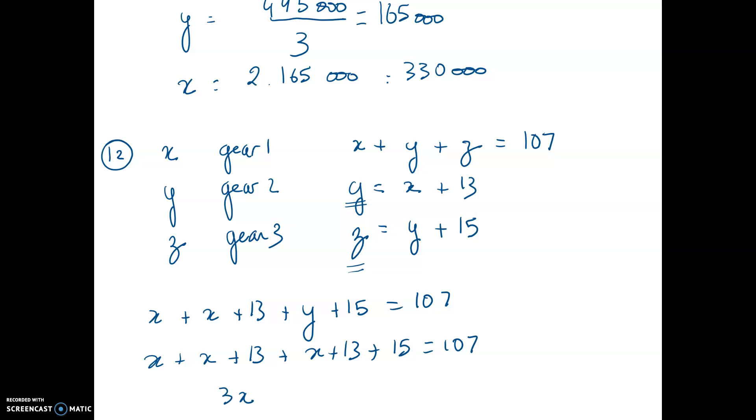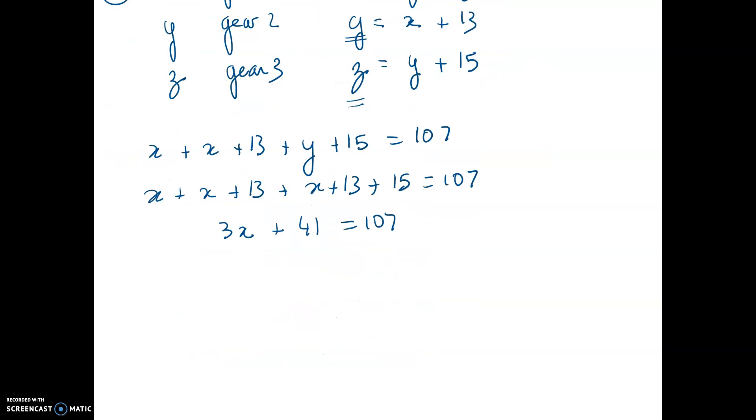Now we got 3X. 26 plus 5, 31 plus 10, 41 equal 107. I subtract 41 from both sides. I end up with 3X equal 106 minus 40, 66.